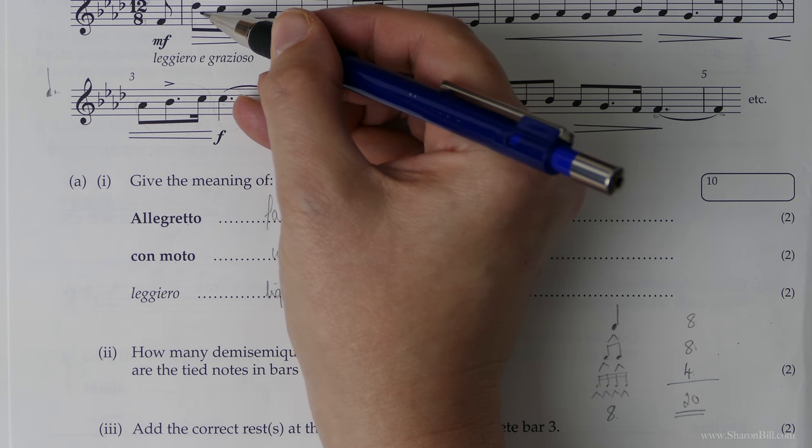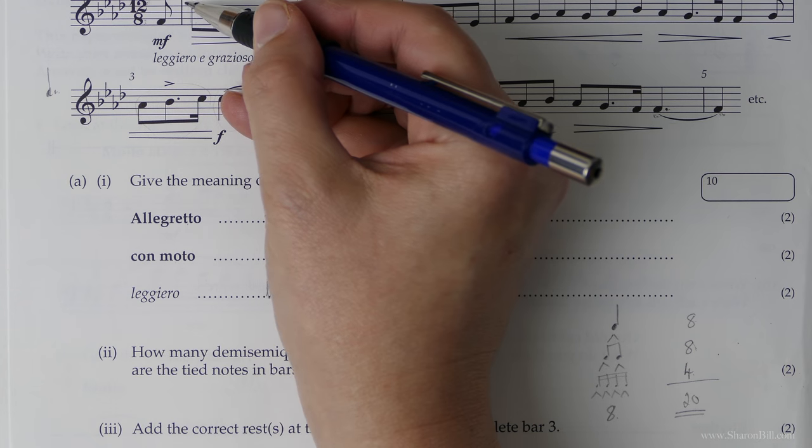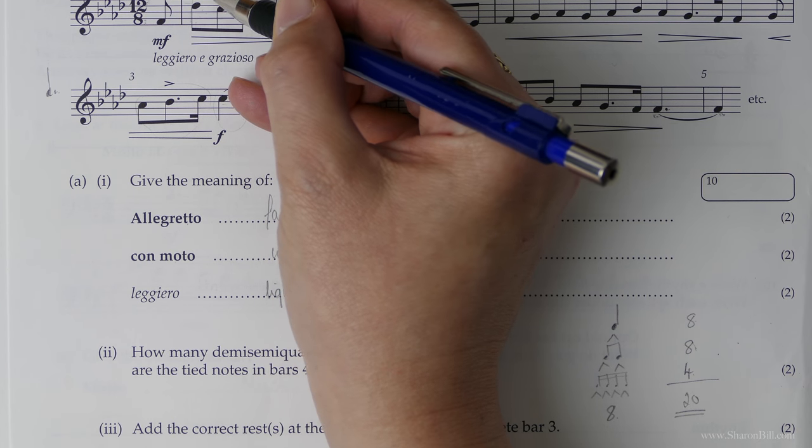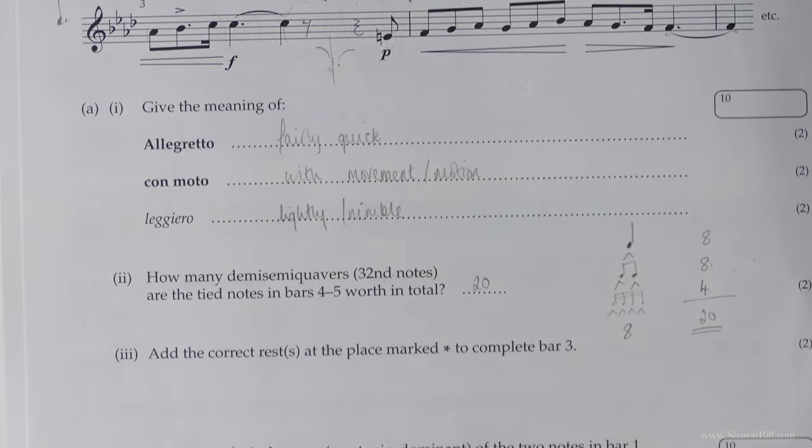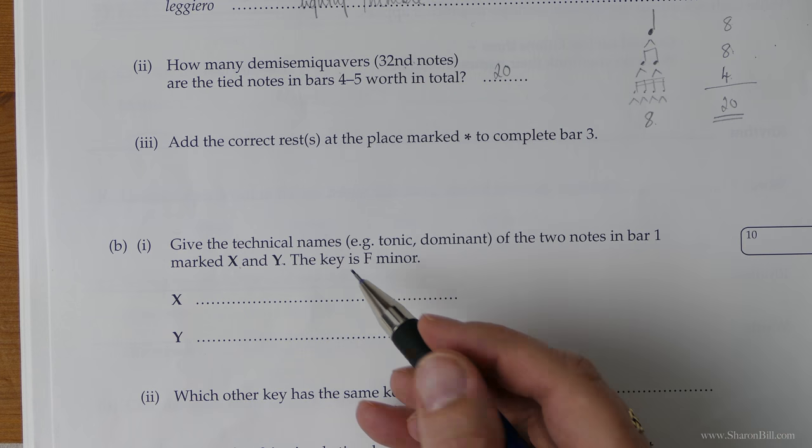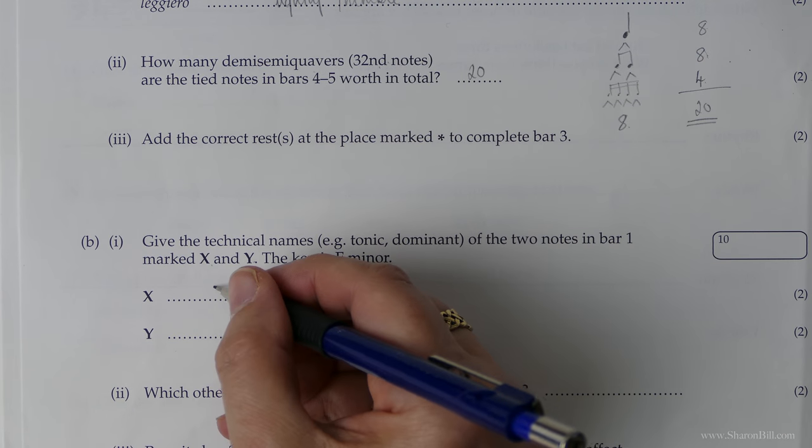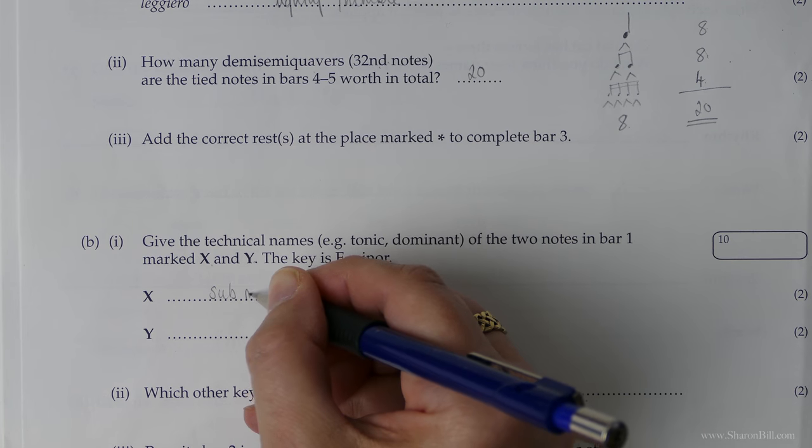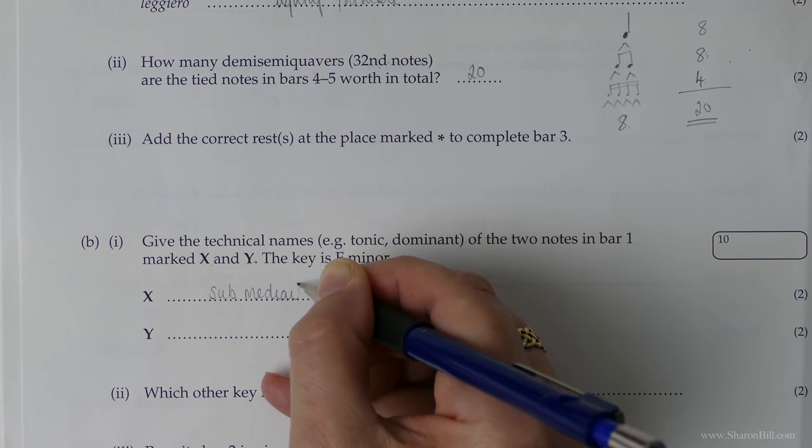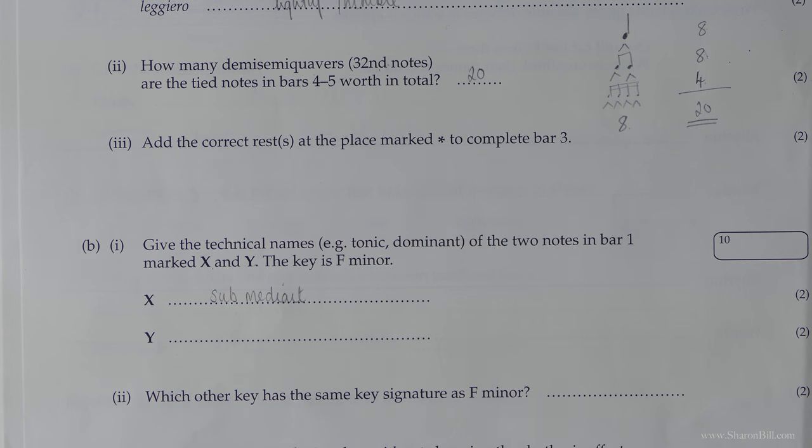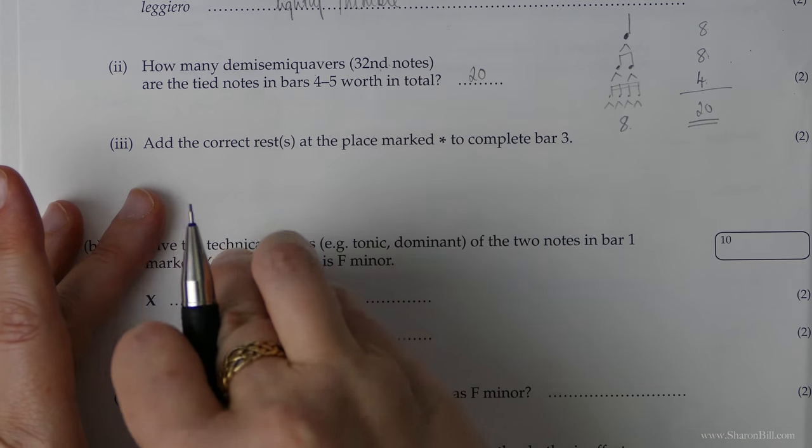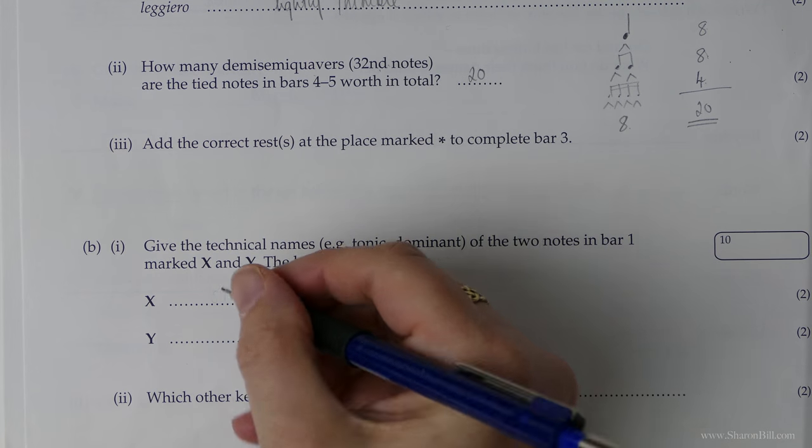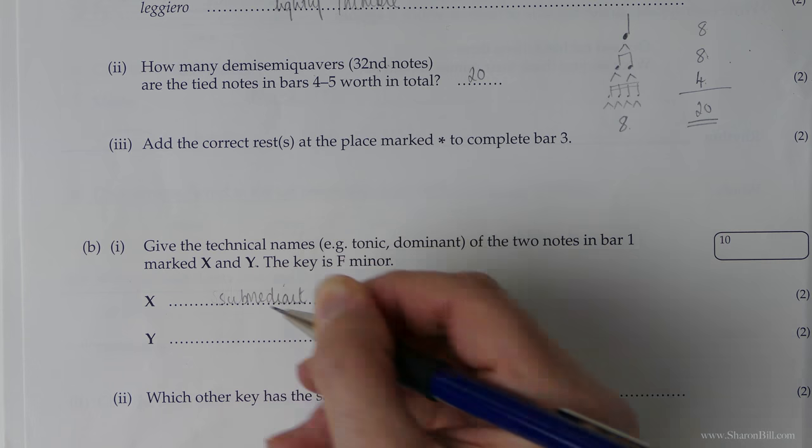So if F is number one. One, two, three, four, five, six. That's the sixth degree of the scale. And the technical name for that, if you remember, is submediant.